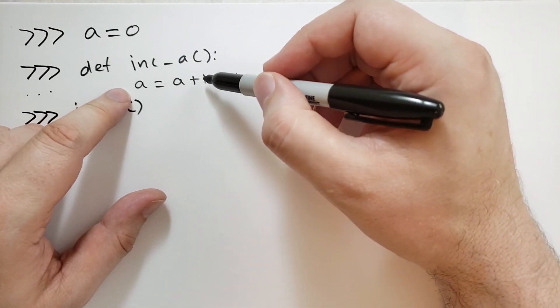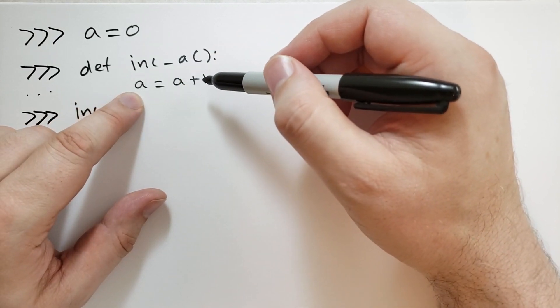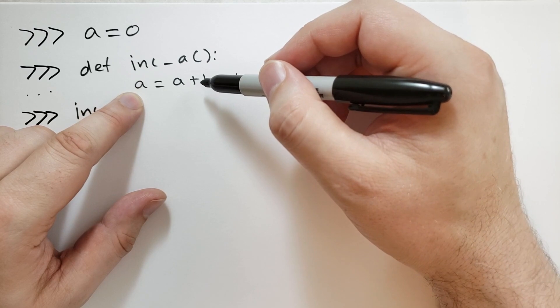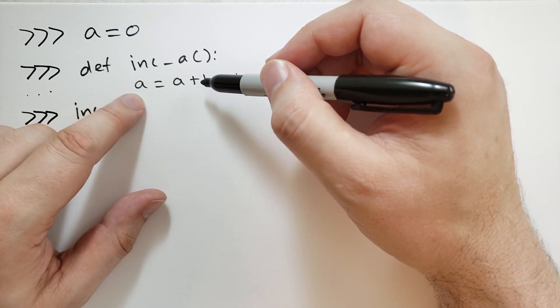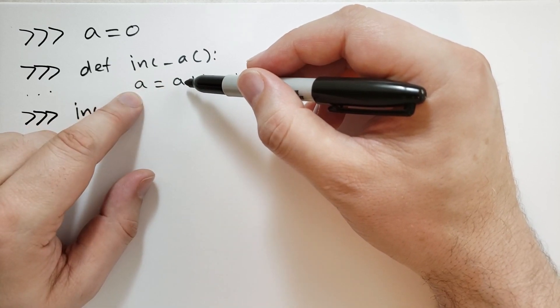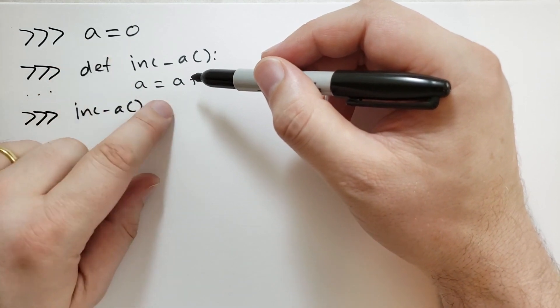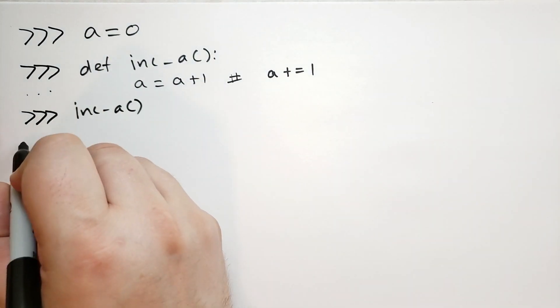When this function was defined, it analyzed the statements, and it saw that, oh, look, you're assigning to the variable A. So it reserved a spot for A. However, at the time of this access for A, you have not yet assigned to it. Now you thought you were accessing the global A. If you wanted that to be the global A, then you'd have to run this statement first.